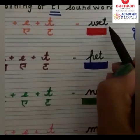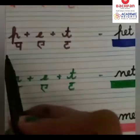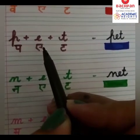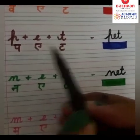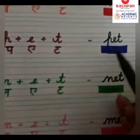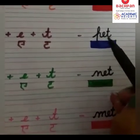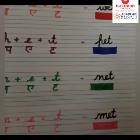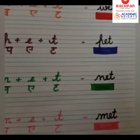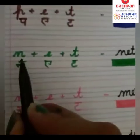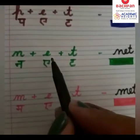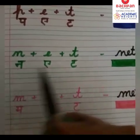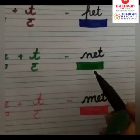W, E, T — Wet. P, E, T — Pet. Is it a short sound word? Yes, E sound is a short sound.